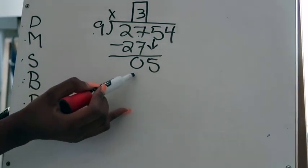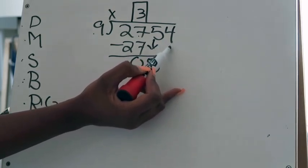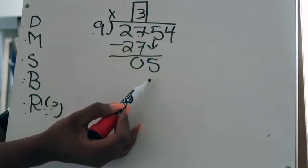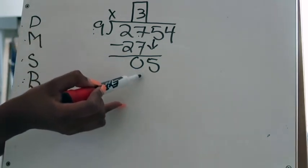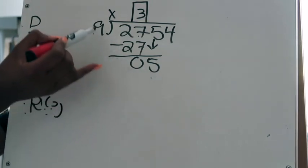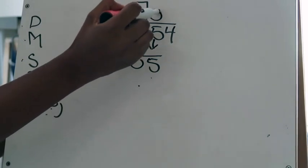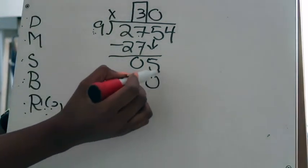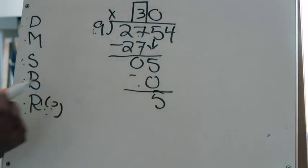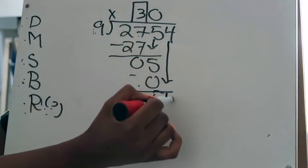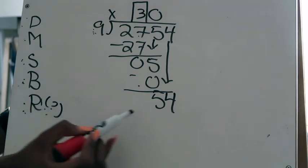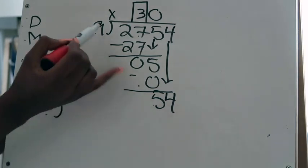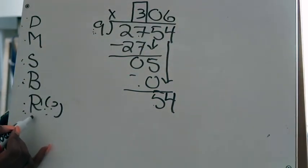R — is that a remainder? No, because there are still digits in the division house to bring down. Even though 5 is smaller than 9, you must represent that 9 cannot go into 5 by saying 9 goes into 5 zero times. Go back to division steps: 0 times 9 is 0. Subtract: 5 minus 0 is 5. Bring down the 4. Ask: is that a remainder? No — 9 can clearly go into 54.